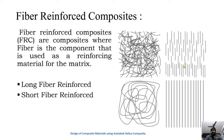In fiber reinforced composites, fibers are used to reinforce the matrix. There are two types: long fiber reinforced composites and short fiber reinforced composites. Both short and long fiber reinforced composites can be further distinguished by the alignment of the fibers.